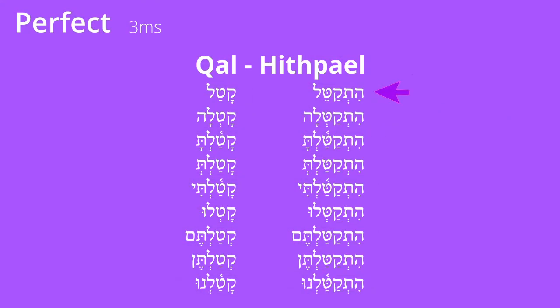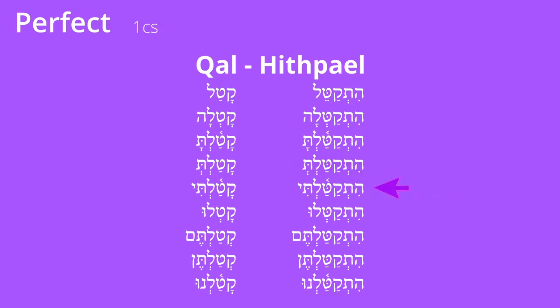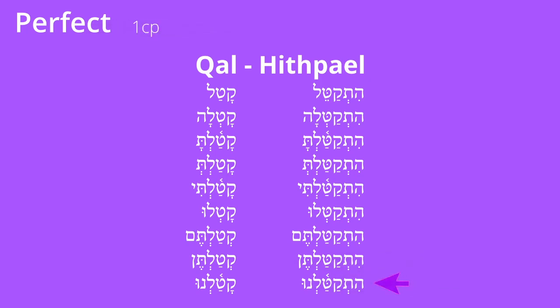Let's compare Qal with Hithpael in the perfect. Qatal / Hithkatel; Katla / Hithkatla; Katalta / Hithkatalta; Katalt / Hithkatalt; Katalti / Hithkatalti; Katalu / Hithkatalu; Kataltem / Hithkataltem; Katalten / Hithkatalten; Katalnu / Hithkatalnu. It's very, very close between Qal and Hithpael, but the major difference is the hey-tav at the beginning.